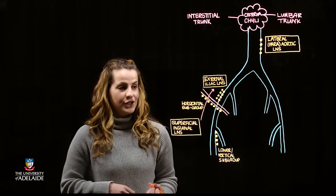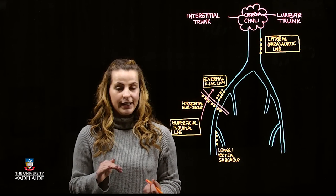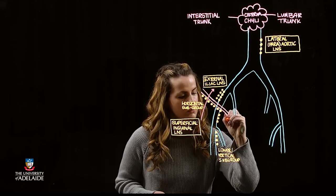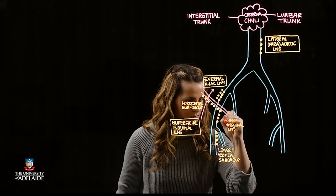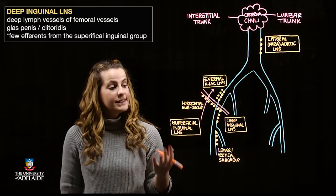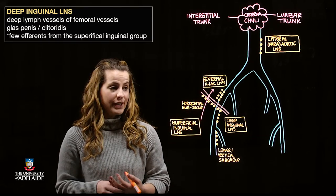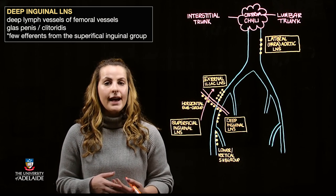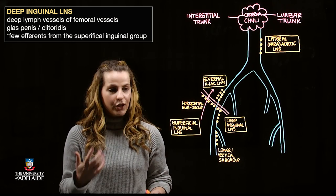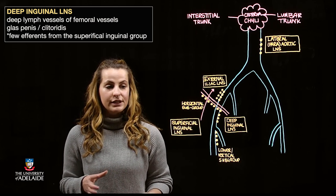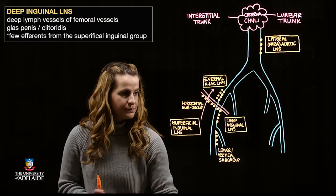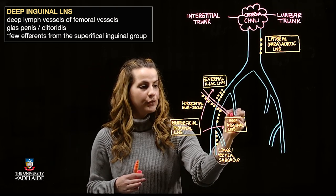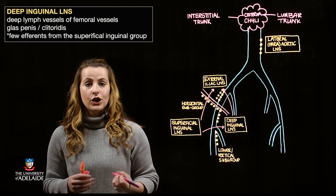The deep inguinal lymph nodes are going to be located deep to the inguinal ligament, specifically coursing medial to the femoral vein. They will receive efferent drainage from the deep lymphatic vessels coursing with the femoral vessels, as well as the glands, penis, and clitoris, along with some contribution from efferents of the superficial inguinal lymph nodes. Similarly, the deep inguinal nodes drain back into the external iliac nodes.